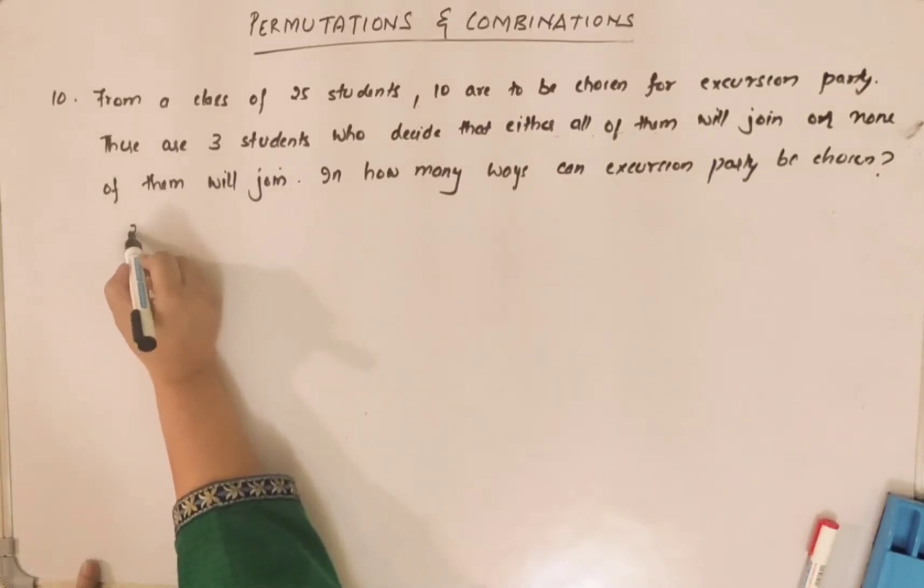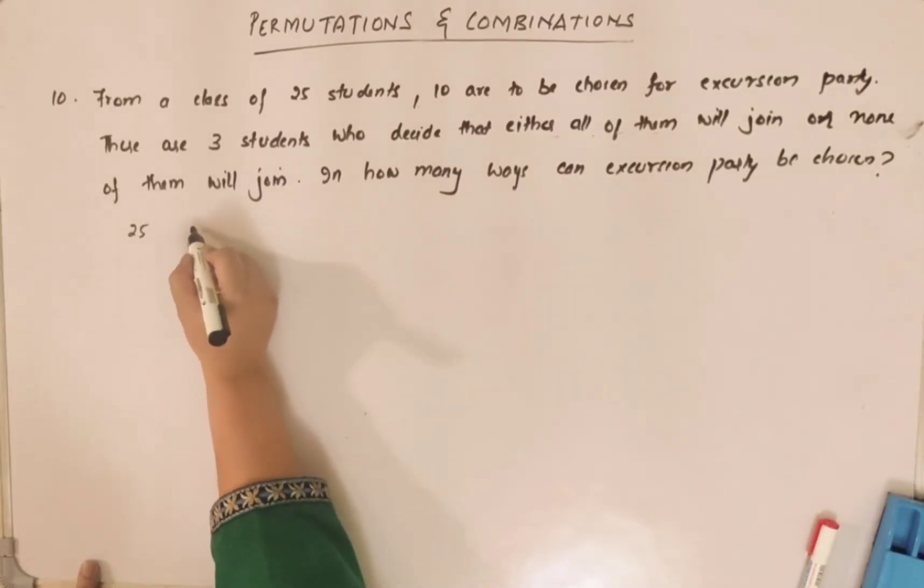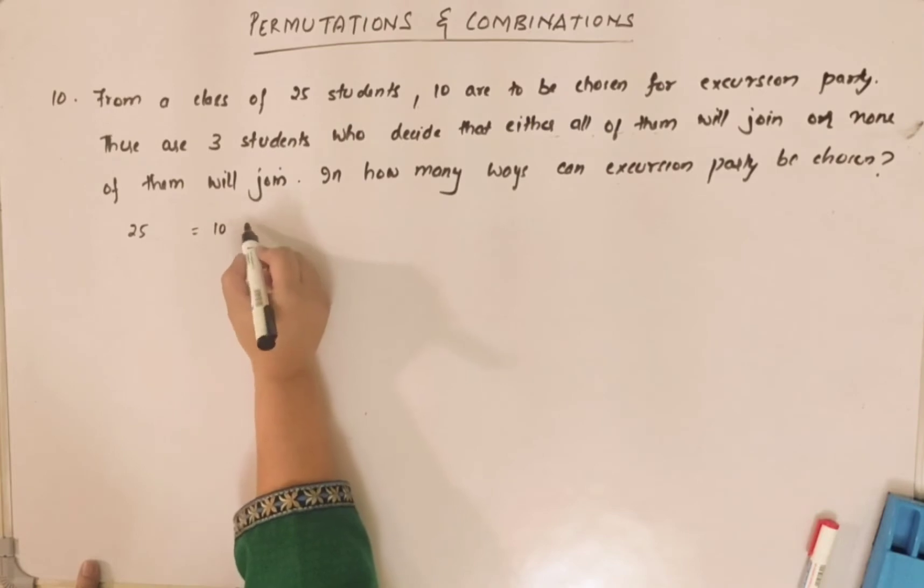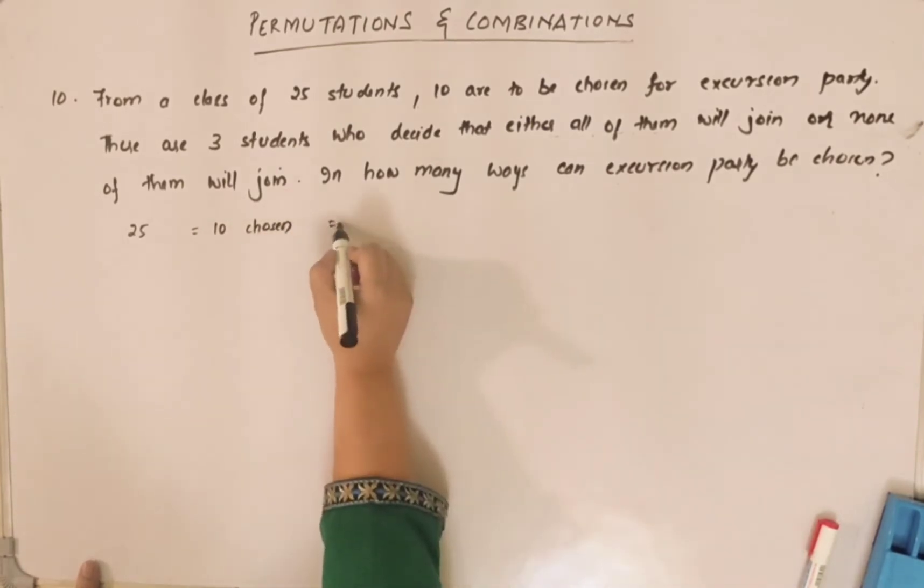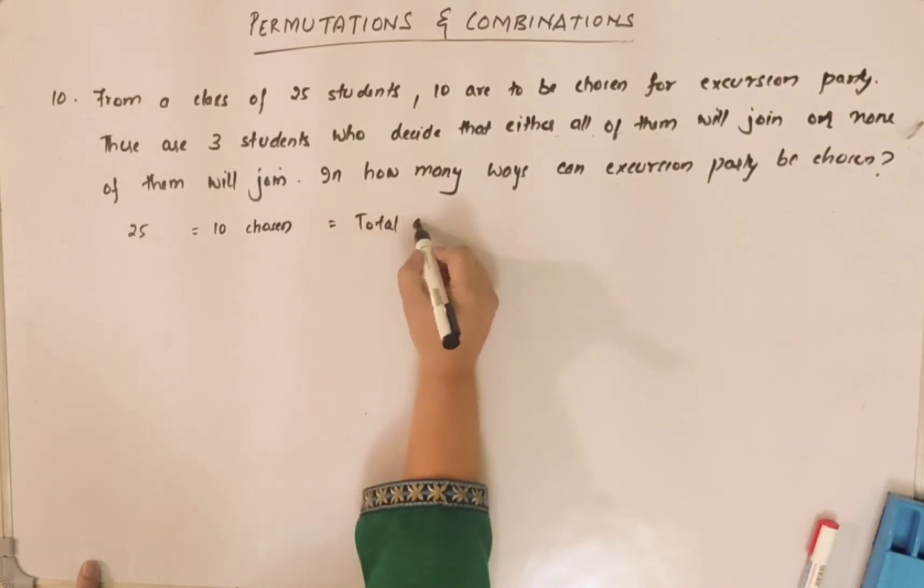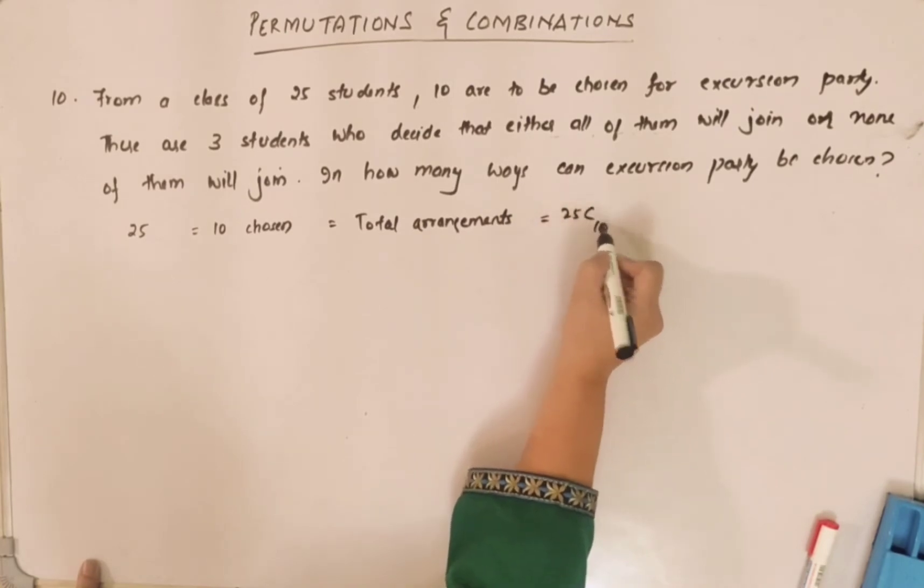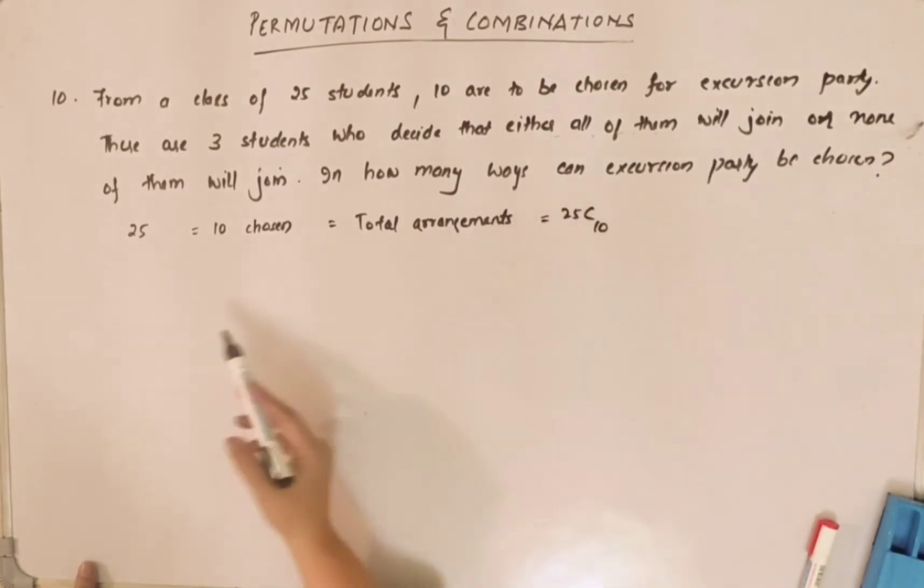So total number of students is 25 and 10 are to be chosen. If you see, the total arrangements or total number of ways is 25C10 actually. But now because there is a condition that three students either will join or not.